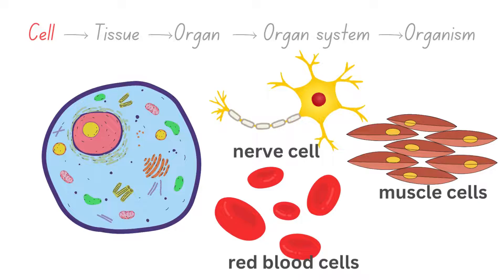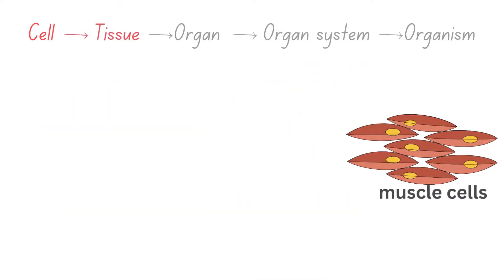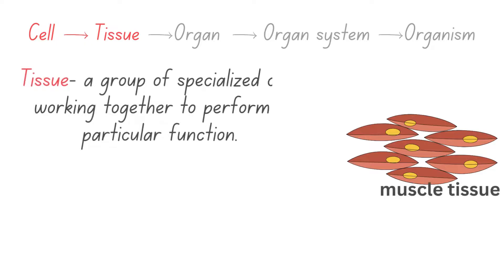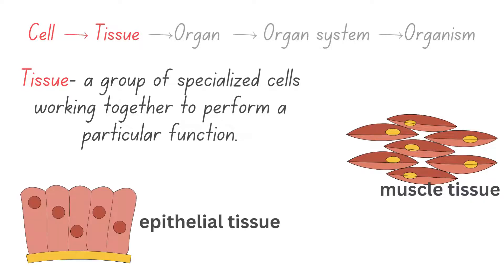When specialized cells with similar functions group together, they form a tissue. A tissue is a group of specialized cells that work together to perform a particular function. For instance, muscle tissue is made up of muscle cells that contract to produce movement, and epithelial tissue forms protective layers on body surfaces and internal organs.